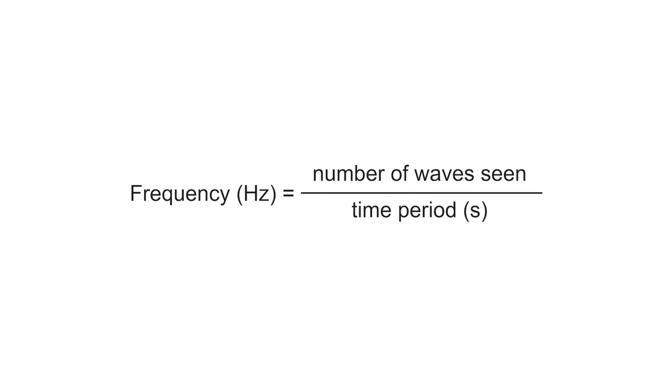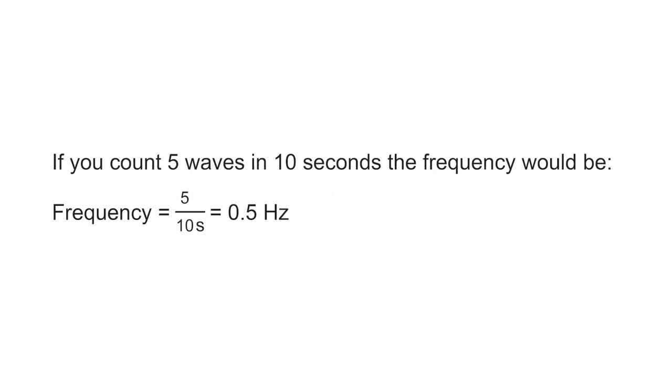Next we need to find the frequency of the waves. To do this we take the number of waves in 10 seconds and divide by 10. So if we counted 5 waves we would divide 5 by 10 and the frequency would equal 0.5 hertz.